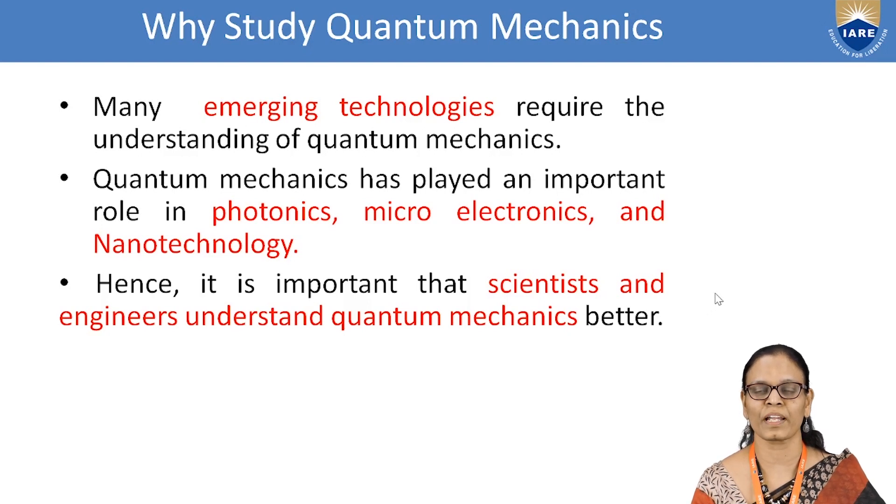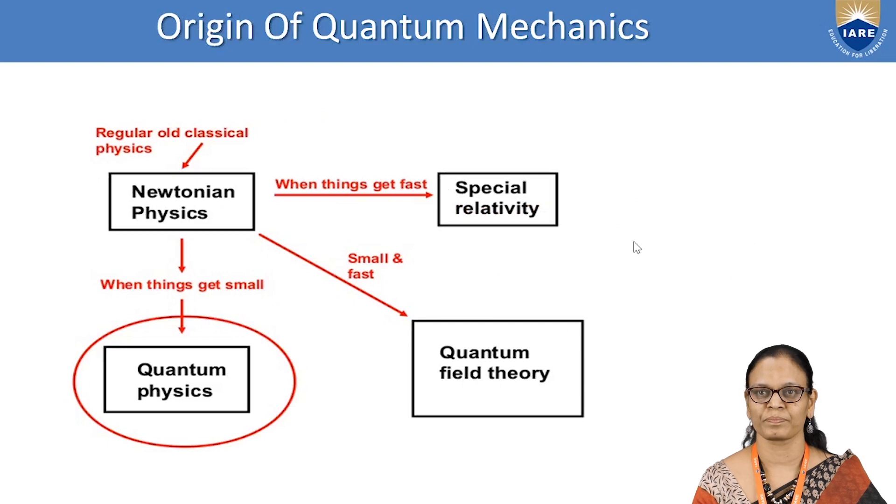It is very important for engineers and scientists to understand quantum mechanics better. Let us first see the origin of quantum mechanics. We have the Newtonian mechanics which we call as the classical mechanics and when things get small we have quantum physics and when things are fast we use special theory of relativity.